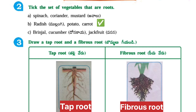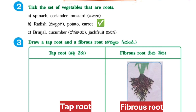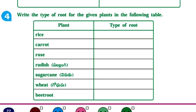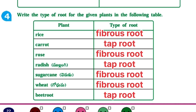I have given two pictures — you try to draw them. Next one, write the type of root for the given plants in the following table. Plant and type of root are asked. Rice: fibrous root. Carrot: taproot. Rose: fibrous root. Radish: taproot. Sugar cane: fibrous root. Wheat: fibrous root. Beetroot: taproot.